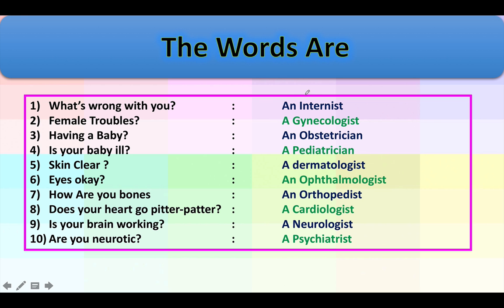For example, a doctor for skin is called a dermatologist, and a doctor who treats your eyes is called an ophthalmologist. You could do rote learning, but you'll probably forget it in a day or two. The best way to learn vocabulary is by word roots. That is why I will use word roots to explain, and by the time the video finishes, the way you look at this table will be very different.